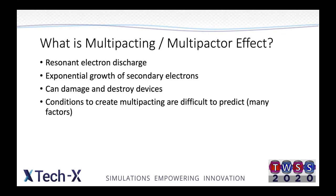To give some background on what multi-packing is, or as it's sometimes known as the multi-packing effect, basically what you get is a resonant electron discharge. You can imagine you have an electron bouncing between two plates. When it hits one of them, it produces some secondary electrons. If it produces more secondary electrons than get absorbed, this can lead to an exponential growth and can damage and destroy devices. This is a particular problem in vacuum electronics.